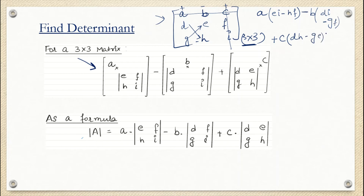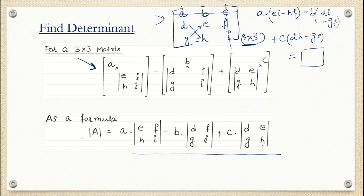So the signs alternate: plus, minus, plus for the three columns. Whatever number comes after calculating all three parts is the determinant of the 3×3 matrix. The same formula is written here. Now we are going to see an example which you can solve yourself before seeing the solution.